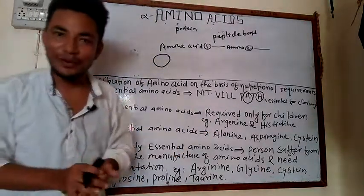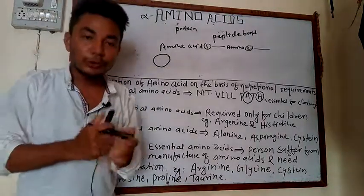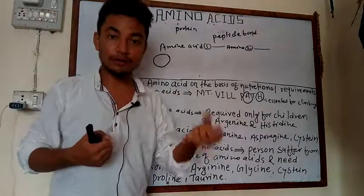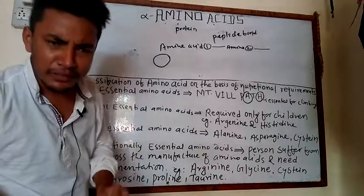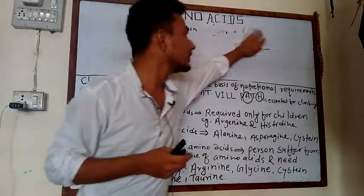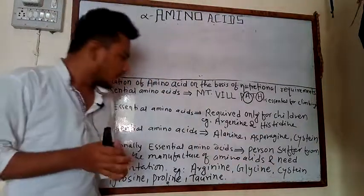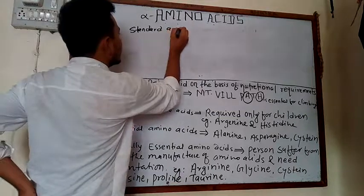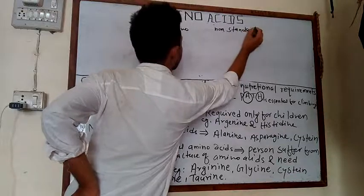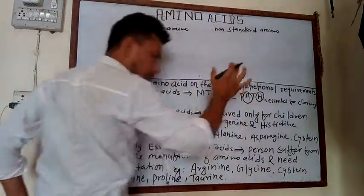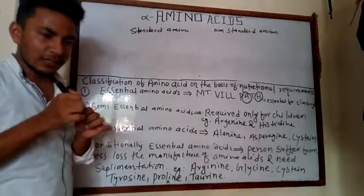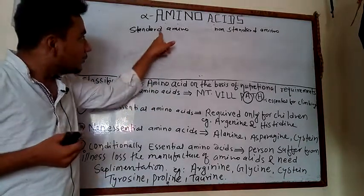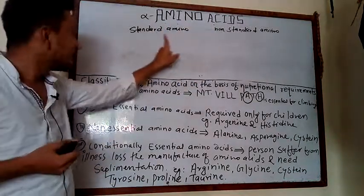The third type is non-essential amino acids. These are amino acids which are prepared by our body itself, meaning they do not need to be obtained from extra diet. To understand non-essential amino acids, we first need to understand that amino acids are broadly divided into standard amino acids and non-standard amino acids.